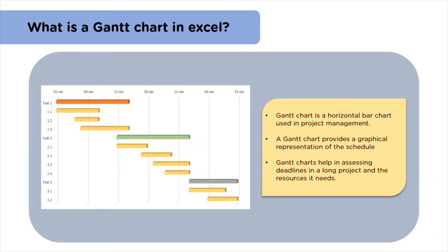A Gantt chart is a horizontal bar chart used for project management. With the help of a Gantt chart, you can check the status of tasks, their start and end dates, and their dependencies on each other. Gantt charts help in coordinating and monitoring different tasks in a project.